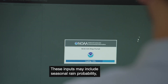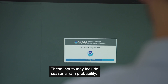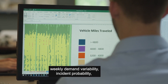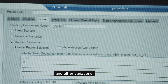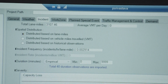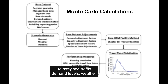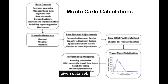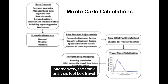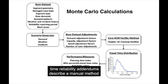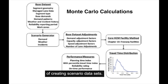These inputs may include seasonal rain probability, weekly demand variability, incident probability, and other variations. Monte Carlo calculations may be applied to assign traffic demand levels, weather conditions, and incident frequencies to any given data set. Alternatively, the Traffic Analysis Toolbox Travel Time Reliability Addendums describe a manual method of creating scenario data sets.